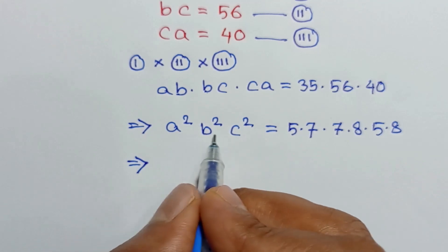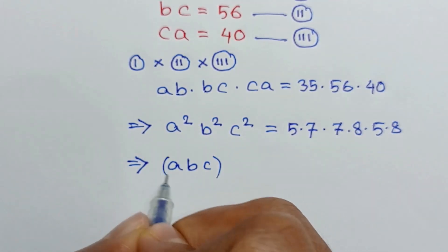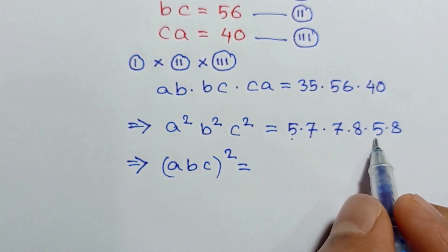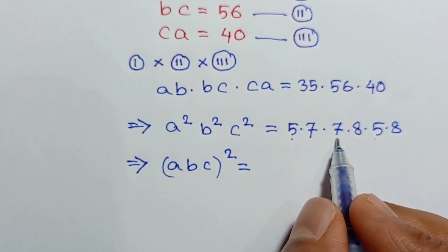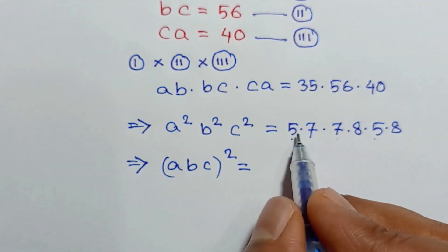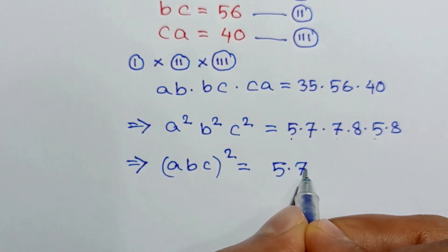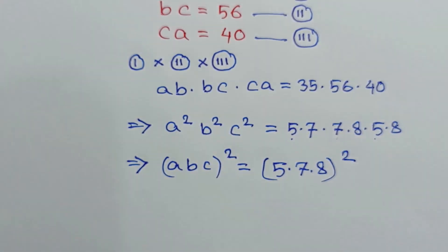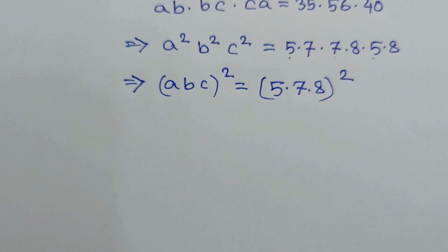So we can write abc whole square is equal to: 5 times 5 is 5 squared, 7 times 7 is 7 squared, and 8 times 8 is 8 squared. Therefore the right side can be written as 5 times 7 times 8, whole squared.